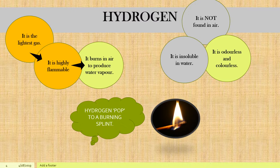Hydrogen is another gas we would like to test. This gas is not found in air, so we need to collect it. It is insoluble in water, and it is also odorless and colorless. Hydrogen is considered the lightest gas and is highly flammable, because it burns in air to produce water vapor. To test for hydrogen, we collect it in a test tube — it must produce a pop sound when we use a burning splint.